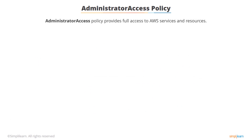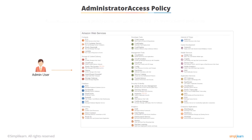One of the most commonly used policies is the administrator access policy, which provides full access to AWS services and resources – it's kind of the administrator or root user. If you have the administrator access policy, you can access absolutely everything in the AWS console, so you would only be giving this to a select few people.